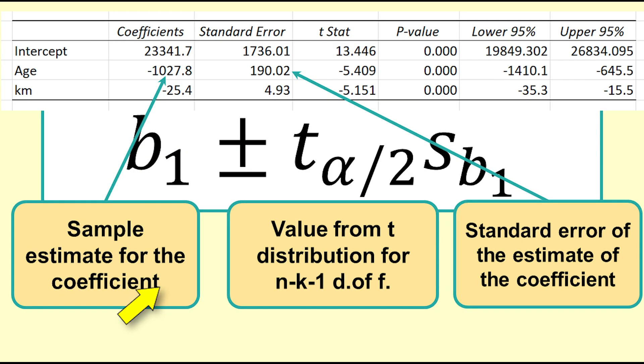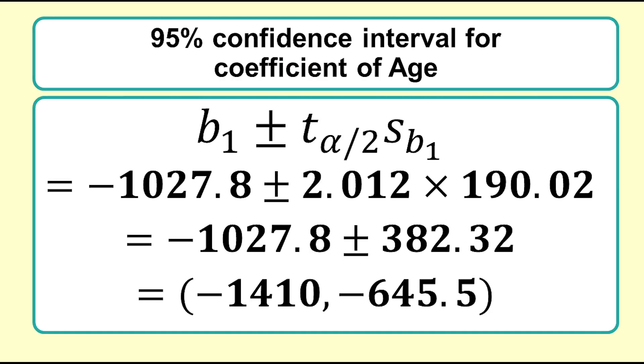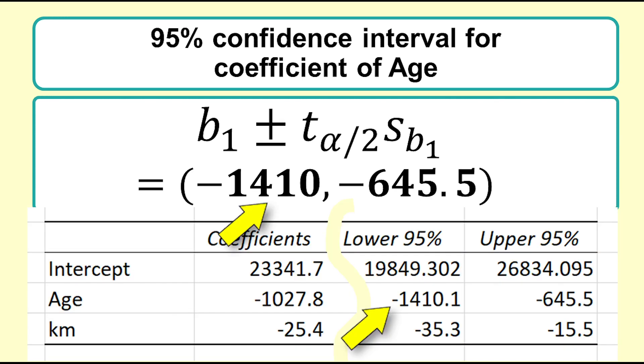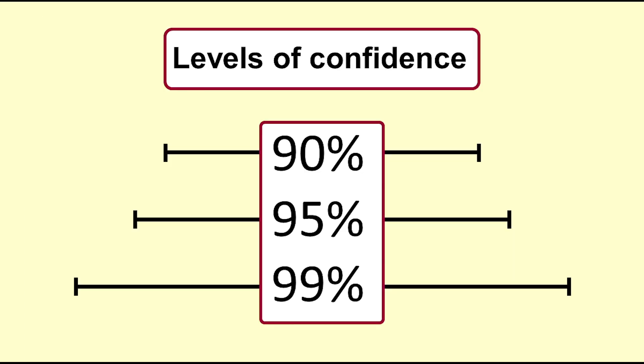We will use this and the values from the output to calculate the confidence interval for the coefficient of age. You can see the formula here giving the same results as the printout. This is a good way to make sure that you understand what is happening. If we wanted to find a different confidence interval for a coefficient...